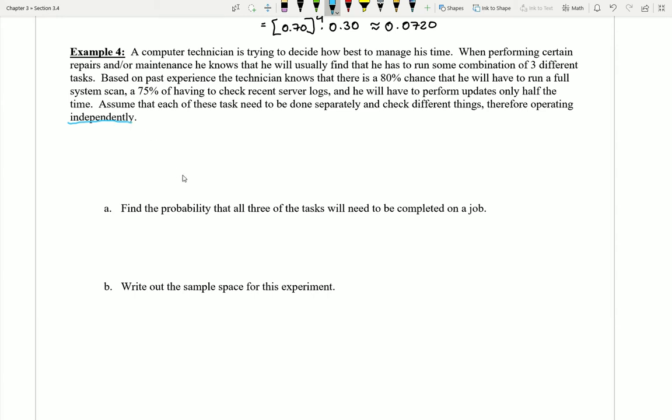You'll notice here that I have a little bit of space up at the top before I jump into part A, and that's because I'm probably going to want to go ahead and think about all the information that I've been given, maybe develop some shorthand and keep track of what the different numbers up here mean. So how about we come up with some different symbols here for each of the different things that this technician might need to do? We know there's an 80% chance they might have to run a full system scan, so how about we have S stands for scan. We have to check recent server logs, so how about L stands for check the logs. And we have to perform updates, how about we let that be U, so this is perform updates.